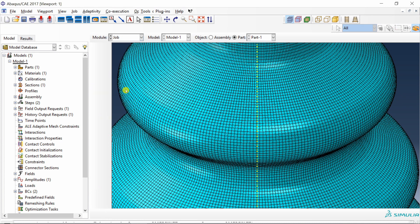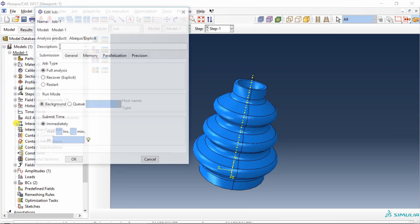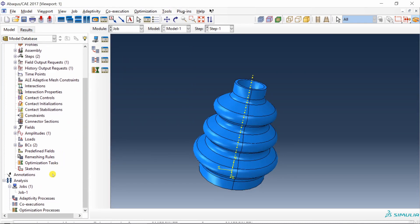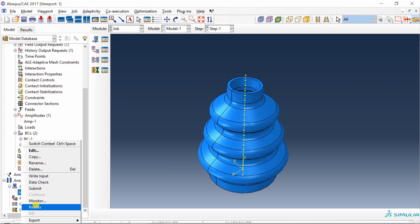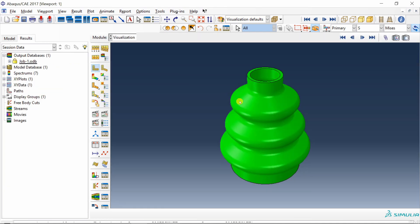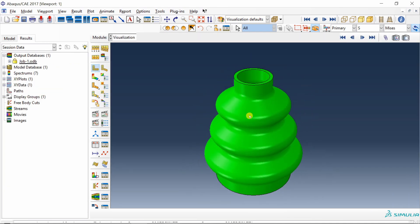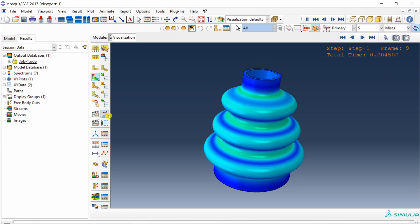Then go to job, create a job and submit it. And now job is done. Let's go into results. I just hide the mesh so that it will look better. And you can see the deformed shape. You can animate time history as well.